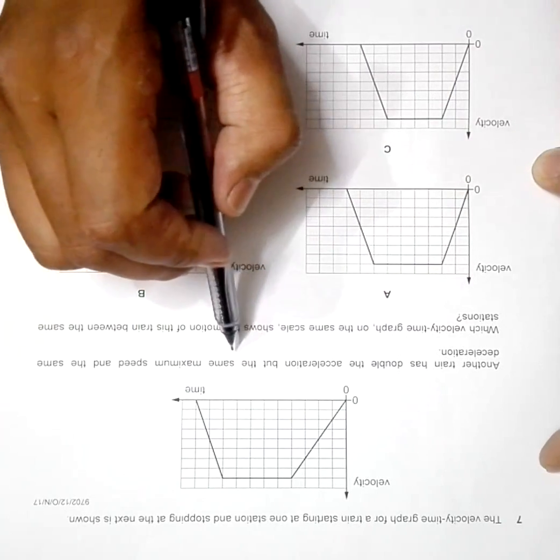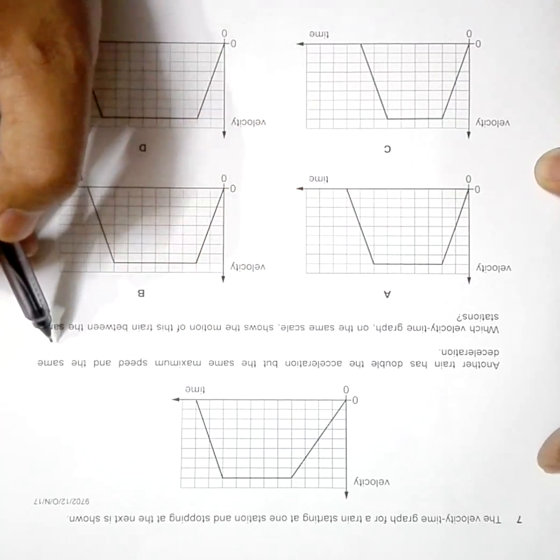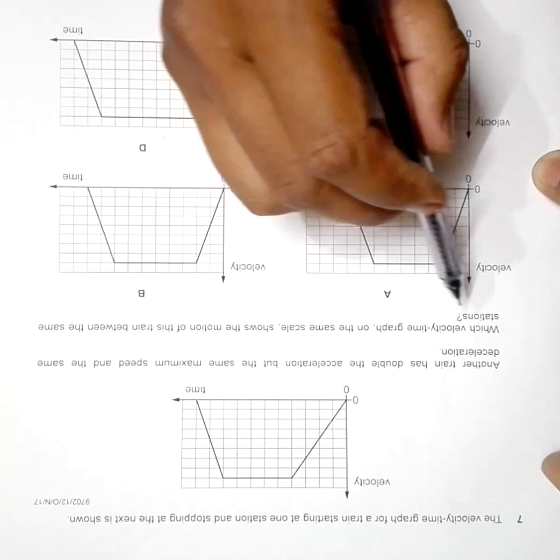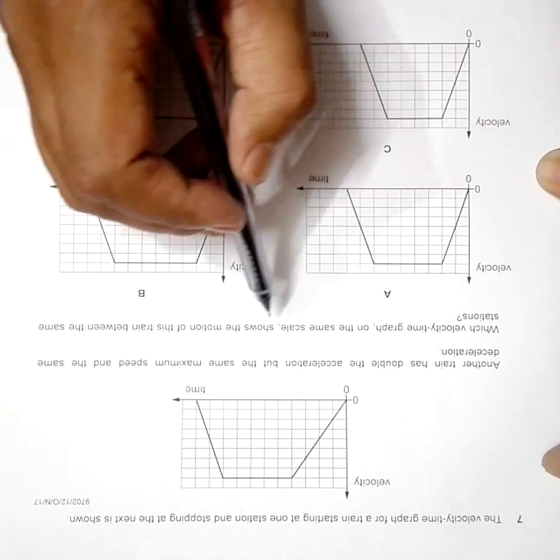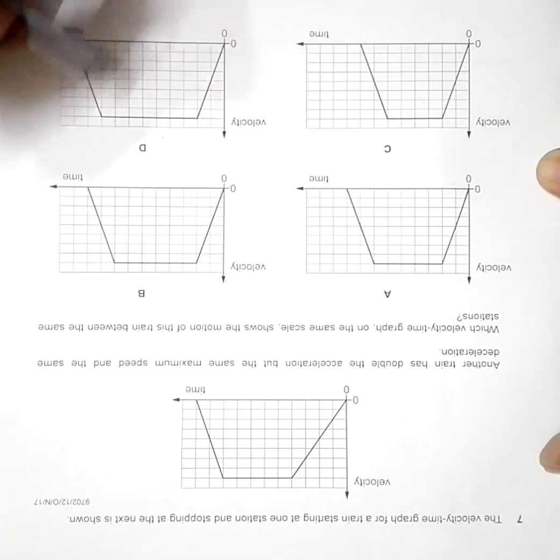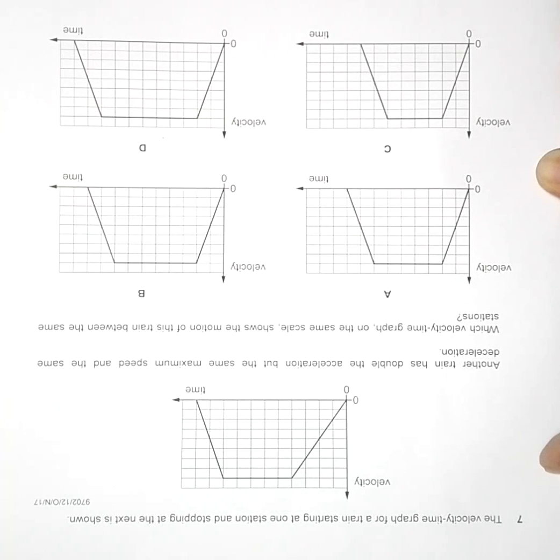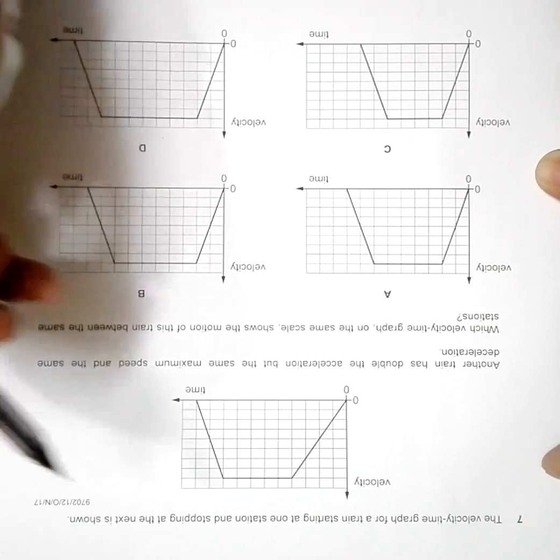Another train has double the acceleration but the same maximum speed and the same deceleration. We have to find which velocity-time graph on the same scale shows the motion of the second train within the same stations.